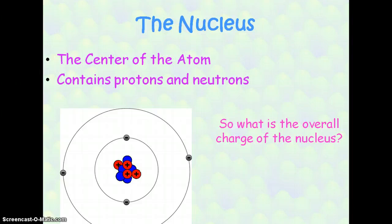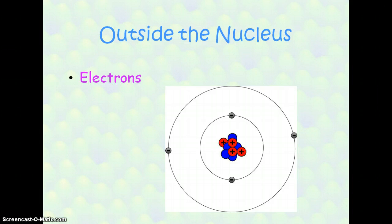These subatomic particles are arranged in specific places. The nucleus is the center of the atom, and this is where the protons and neutrons are. Based on the fact that the protons and neutrons are only in the nucleus, the overall charge of the nucleus is positive. Outside the nucleus, you have the electrons. The electrons are attracted to the nucleus because electrons are negative and the nucleus has an overall positive charge because of those protons.